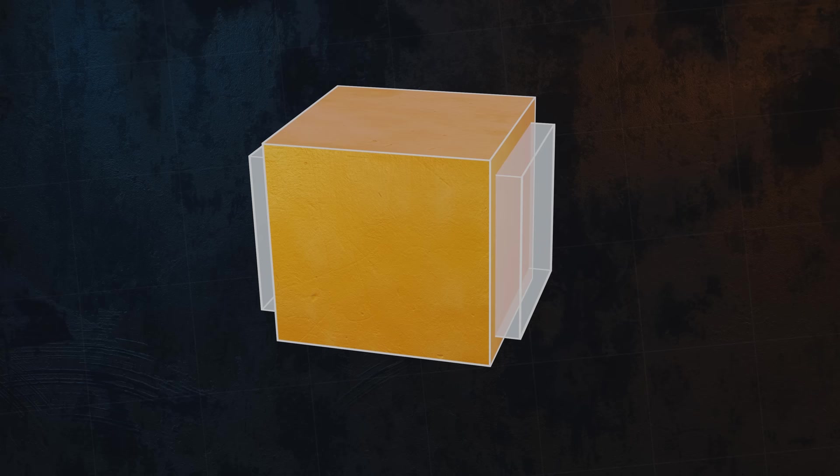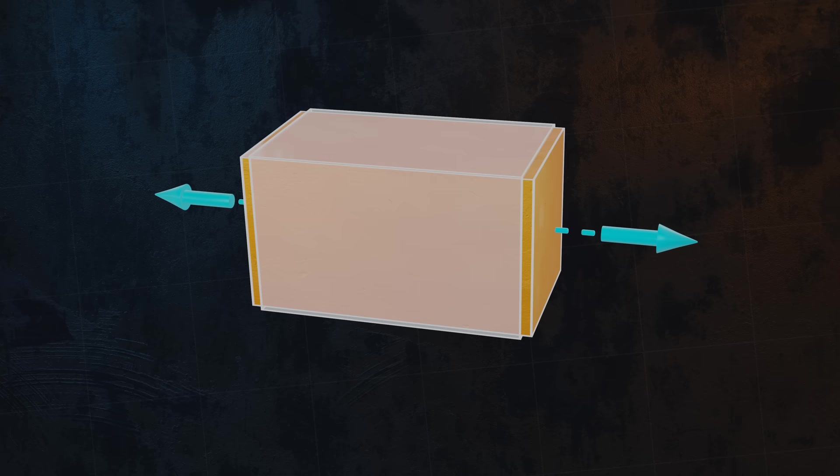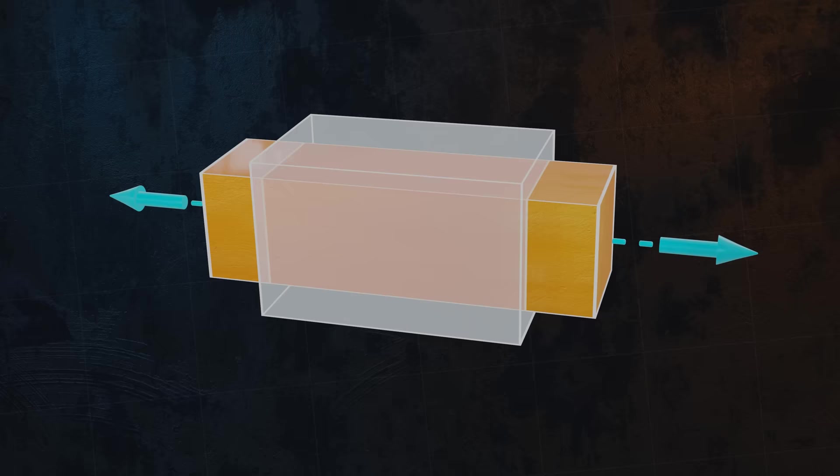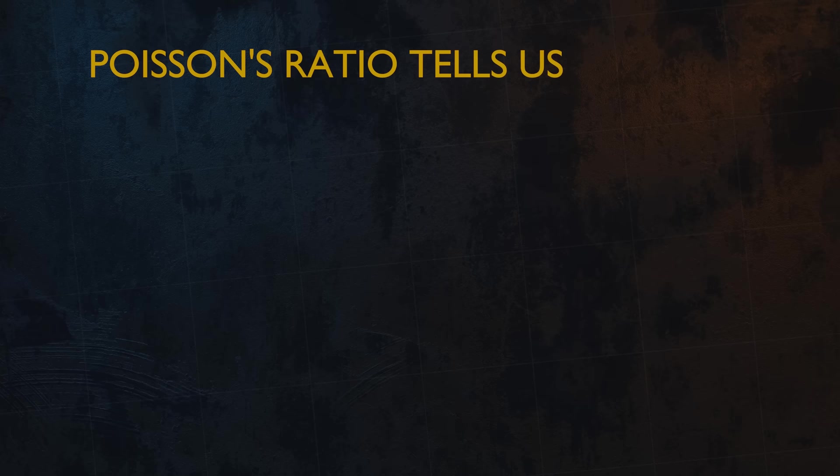If we reverse the direction of the force to apply a tensile load, the cuboid will obviously extend in the longitudinal direction and it will contract in the lateral directions. The key concept here is that when you apply a load to a material in one direction, the material will also deform in the lateral directions. Poisson's Ratio is the parameter that tells us how much the material will deform in the lateral directions.